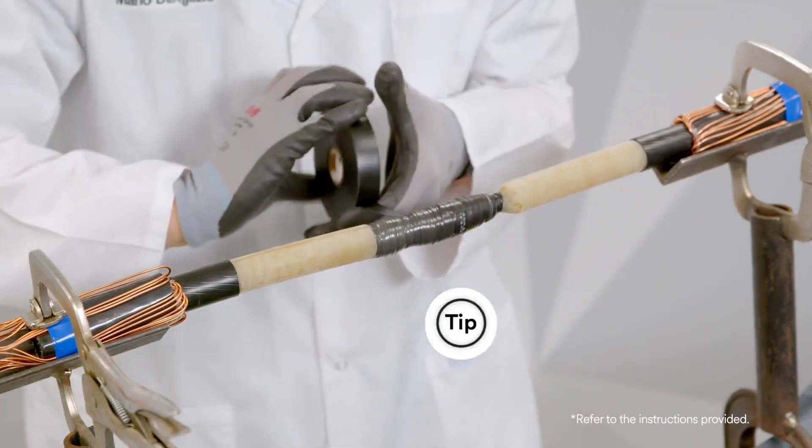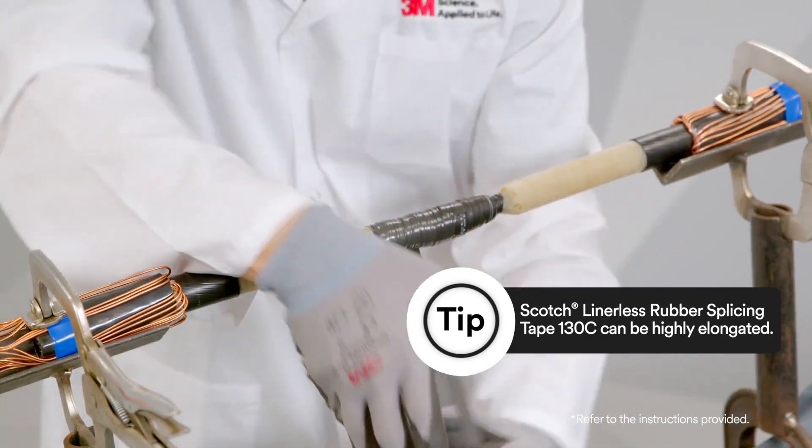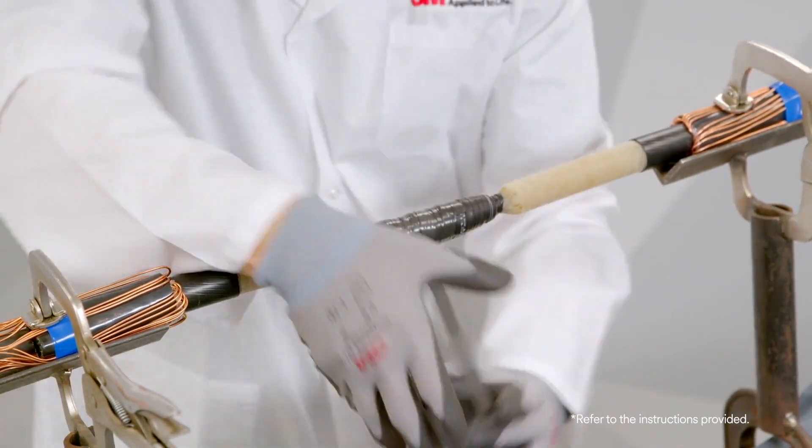Make sure you apply enough Scotch Linerless Rubber Splicing Tape 130C to build up the thickness to one to one and a half times the original insulation thickness.